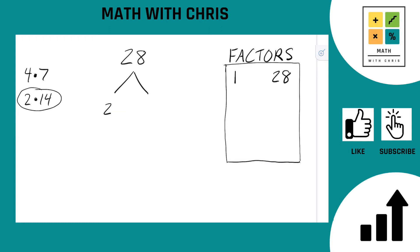So, let's put those into the tree. 2 times 14. Let's look at the 2 first. 2 is a prime number. That's done. Circle them. What about 14? Can anything multiply together to give us 14? Of course, we can do 2 times 7. That gives us 14.